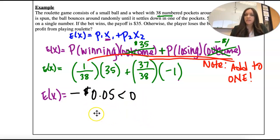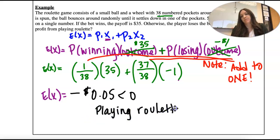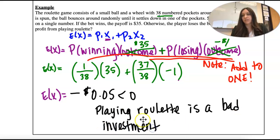What does that mean? That means playing roulette is a bad investment. The probability and the expected value show that in most cases, you're going to walk away losing. You're going to be in the negatives. Okay, so expected value tells us that.